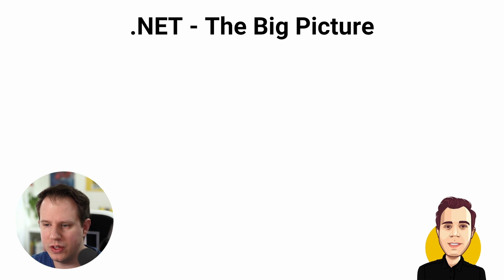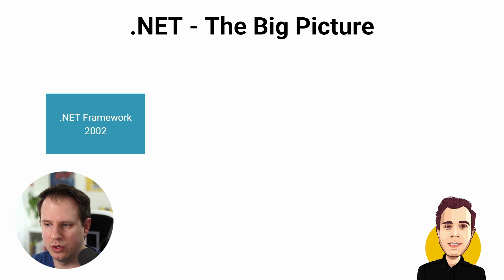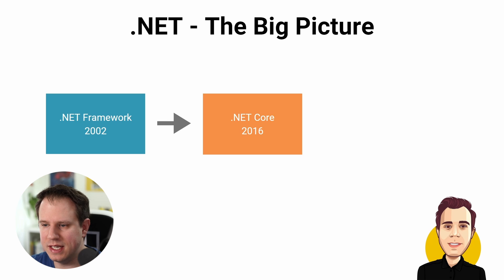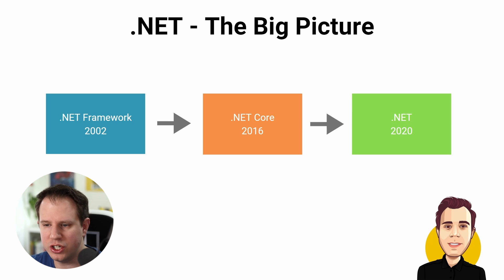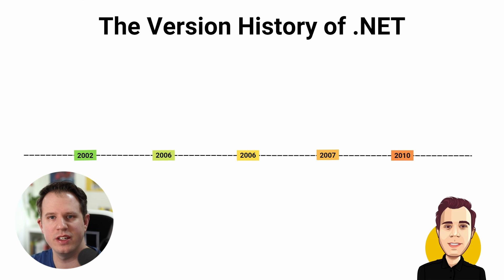From a high-level overview, everything started with the .NET Framework in 2002. .NET Core followed in 2016 and was finally turned into .NET, beginning with version 5 in 2020. However, we need to dive deeper to fully understand how it all came along, why it changed the name twice, and what exactly differentiates .NET Core from the .NET Framework. Let's relive the .NET journey chronologically by traveling back in time and starting at the very beginning.